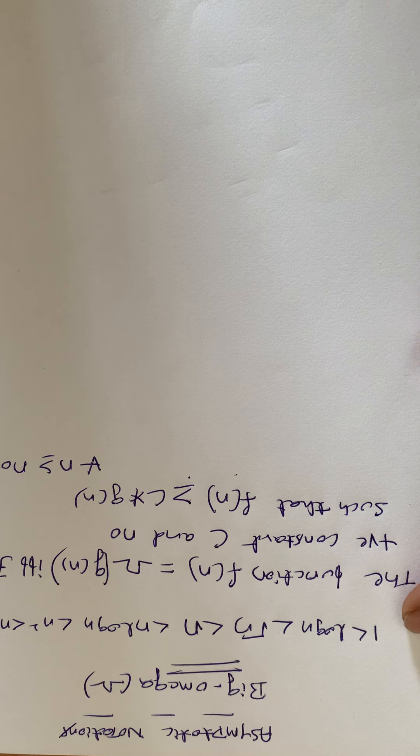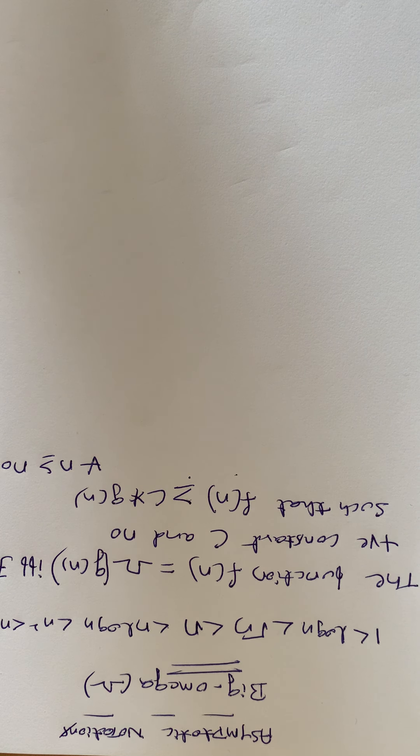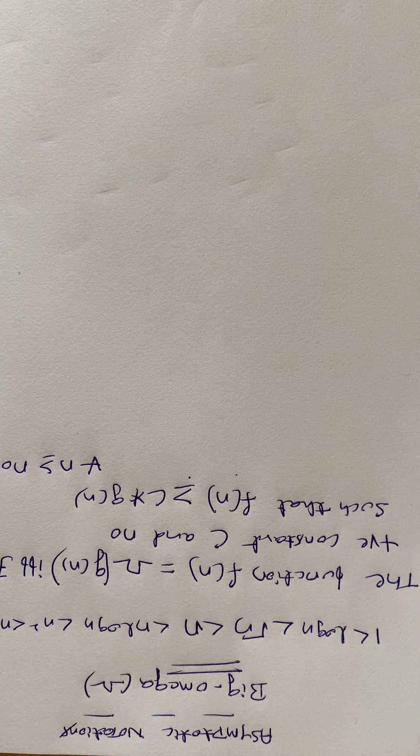I will repeat the definition again. Let f(n) be the time complexity of an algorithm. The function f(n) is said to be Ω(g(n)) such that c and n₀ are positive constants, and f(n) ≥ c·g(n) for all n ≥ n₀. This is the definition of Big Omega.